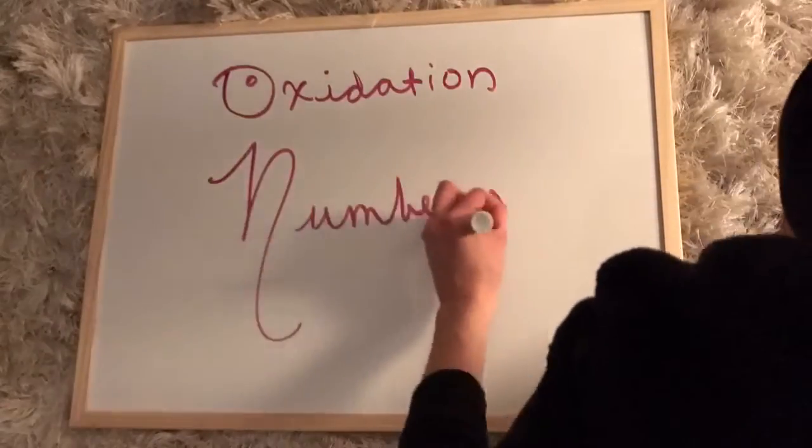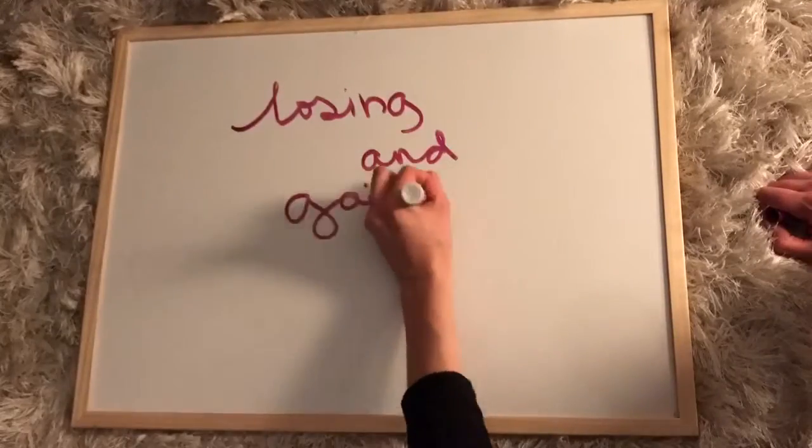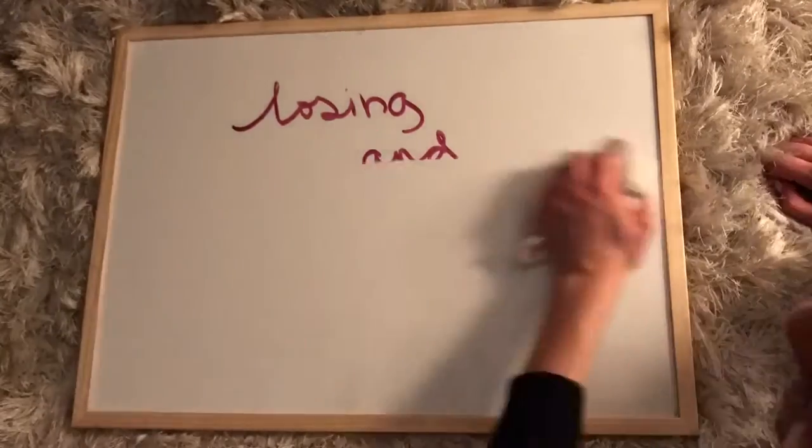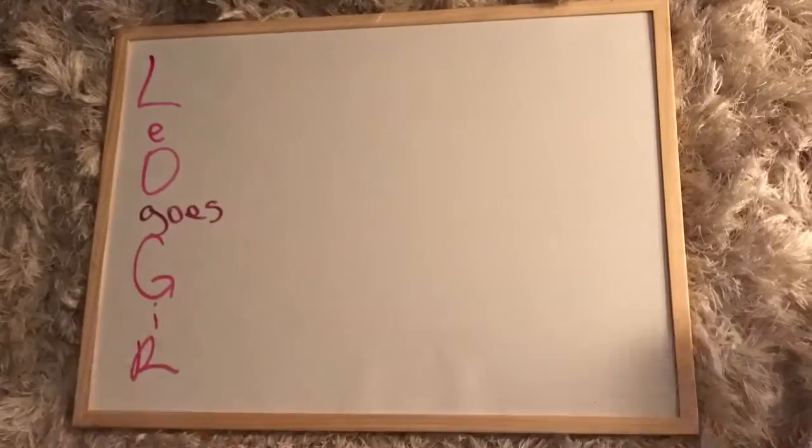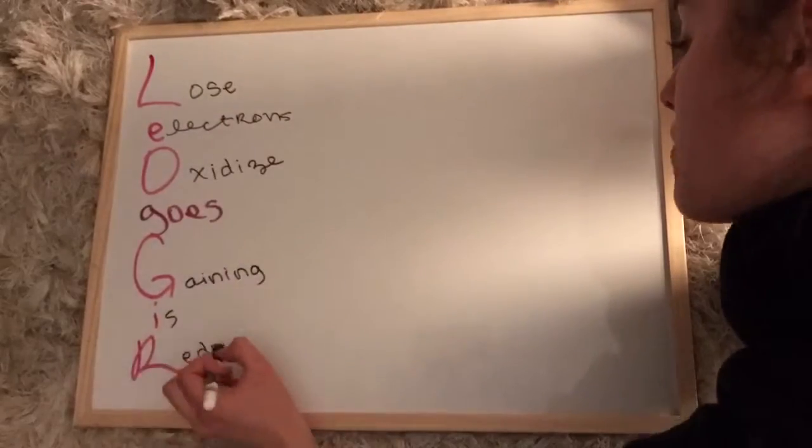So oxidation numbers, what exactly are they? Well, it's attributing numbers to elements that lose and gain electrons. And a way to remember this is Leo goes ger. If you lose an electron, you're oxidized. And if you gain an electron, you're reduced.